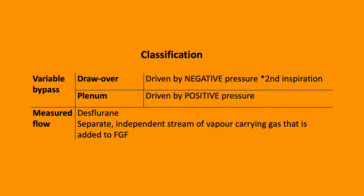Classification of vaporizers can be complex, but a common way is measured flow or variable bypass. Measured flow is for desflurane — there is a separate, independent stream of vaporizer flow which is added to the fresh gas flow. In comparison, variable bypass, the most common, is plenum. This is driven by a positive pressure due to the high resistance of the vaporizer.